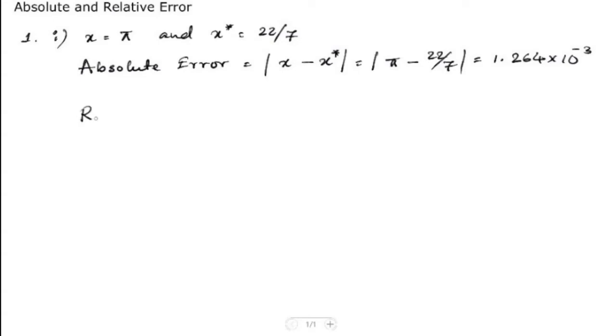And then the relative error formula is the absolute of x minus x star divided by x, which is equal to pi minus 22 by 7 divided by pi, and that will give us the value of 4.02499 times 10 to the power minus 4.